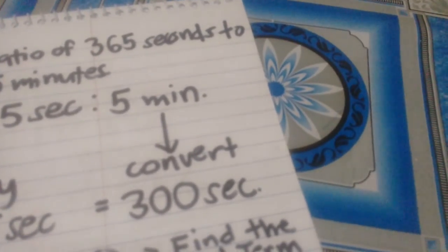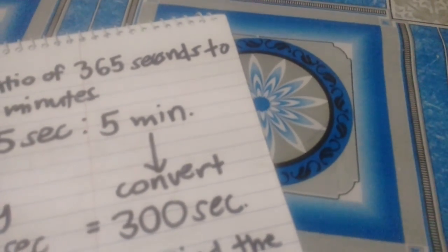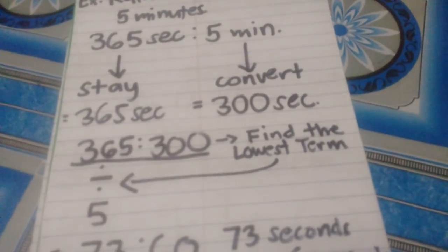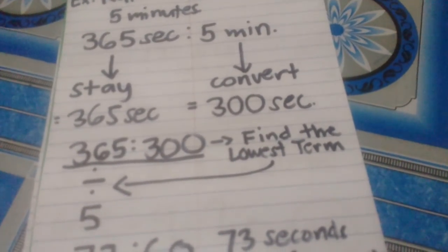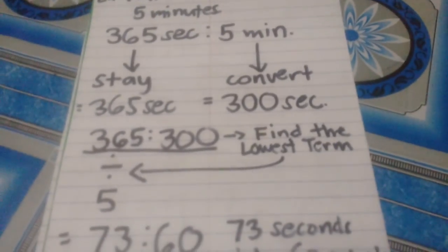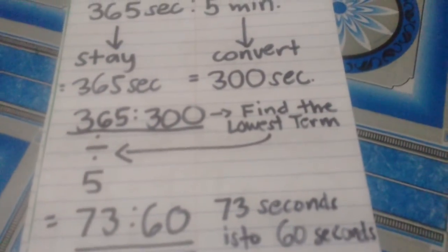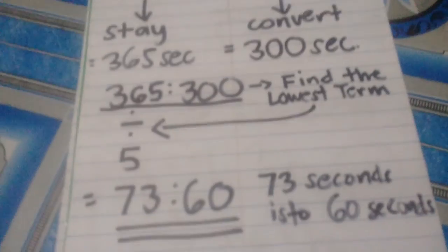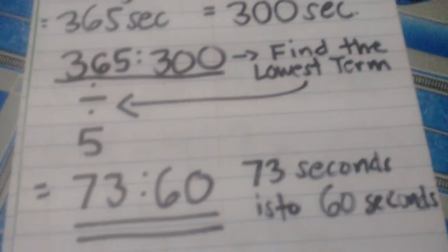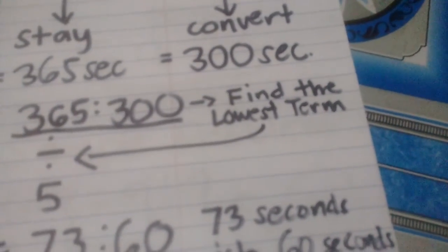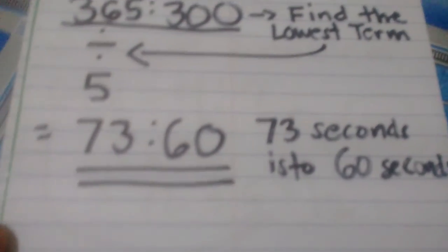365 is to 300. You still need to find the lowest term. To find that, you need to divide by its GCF or greatest common factor, which is 5. After that, you can get the final answer: 73 is to 60.